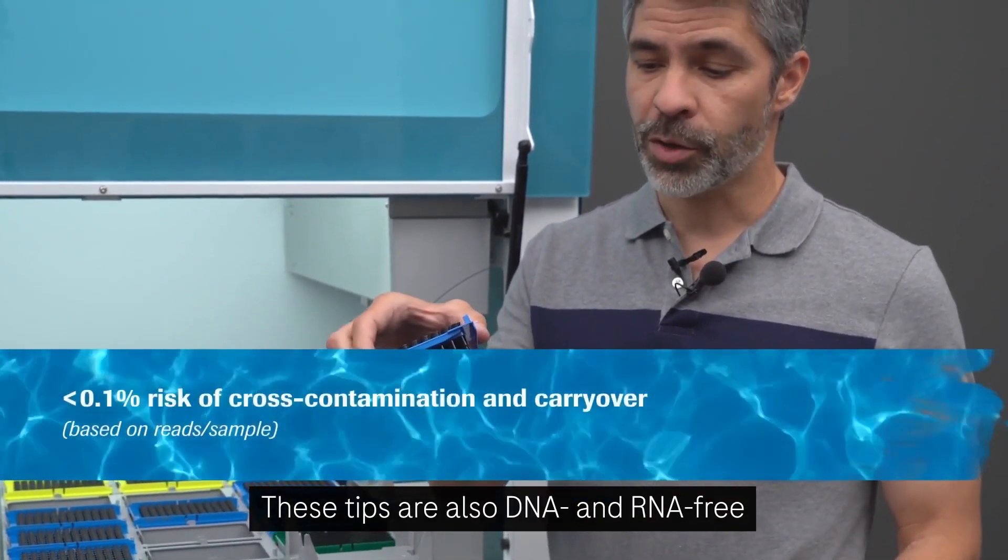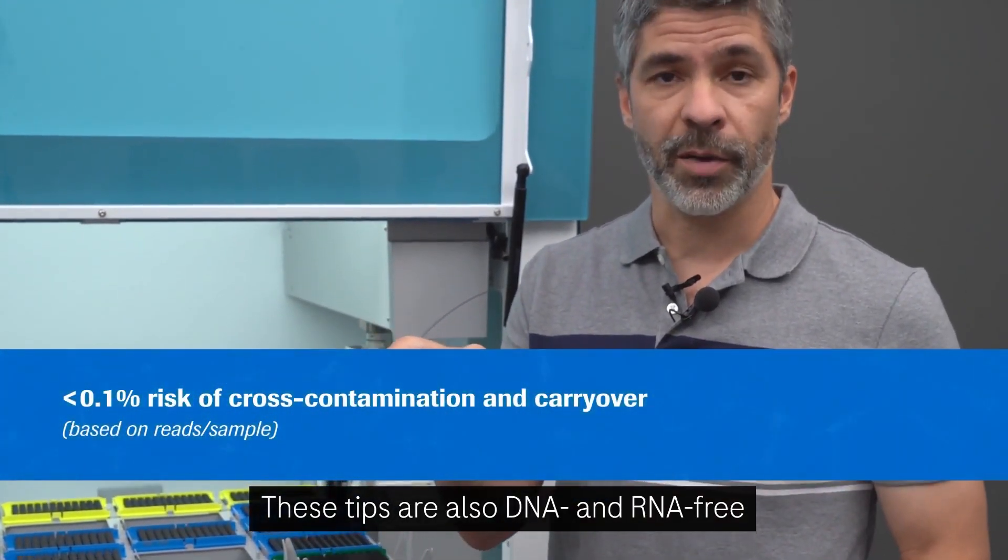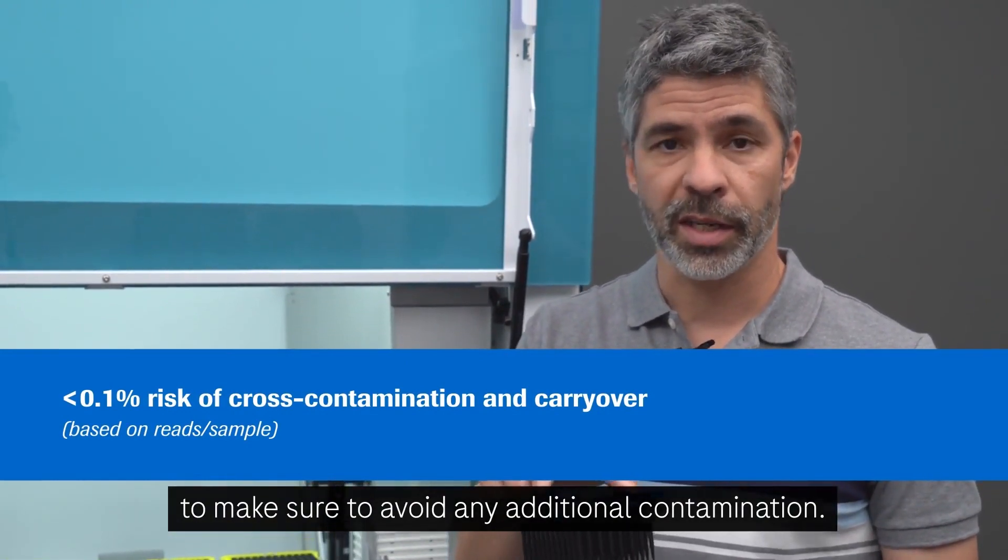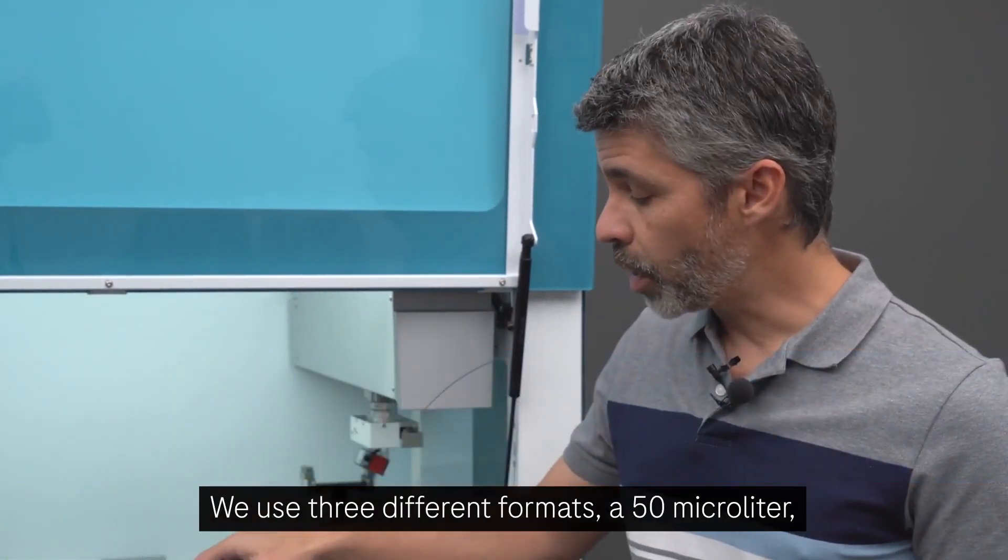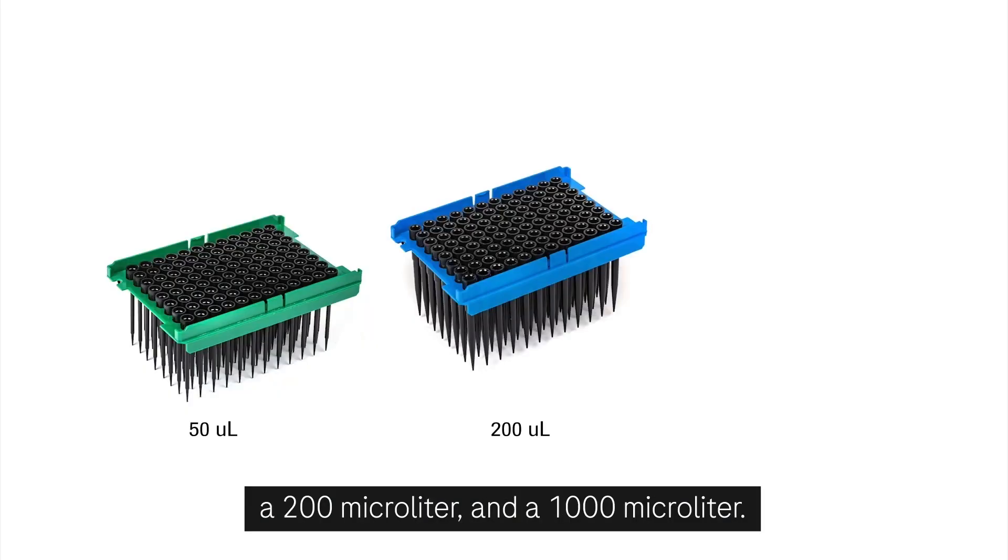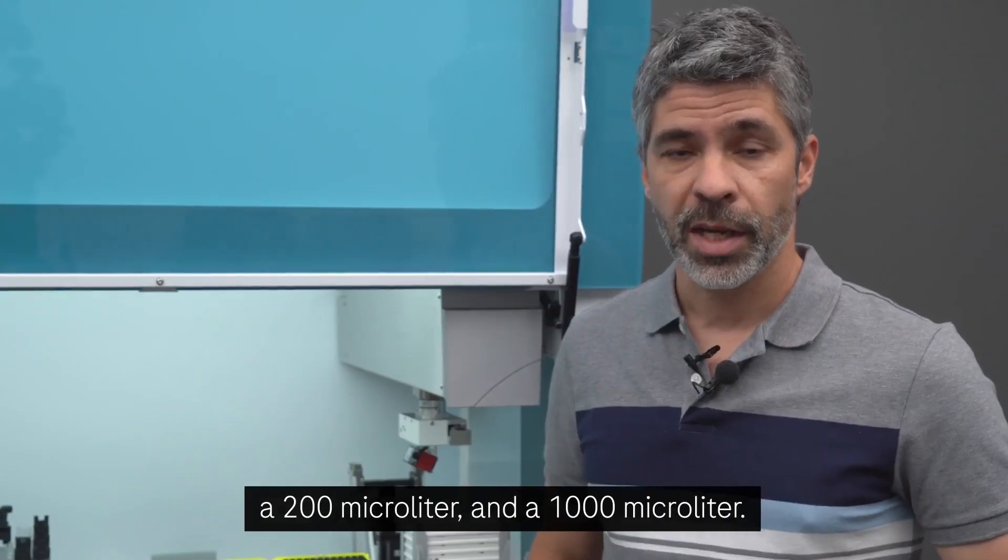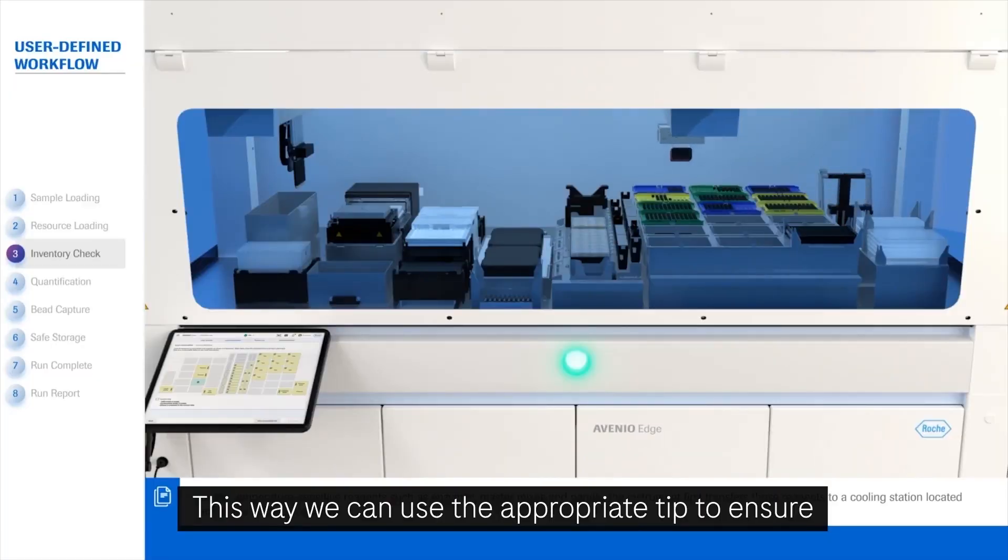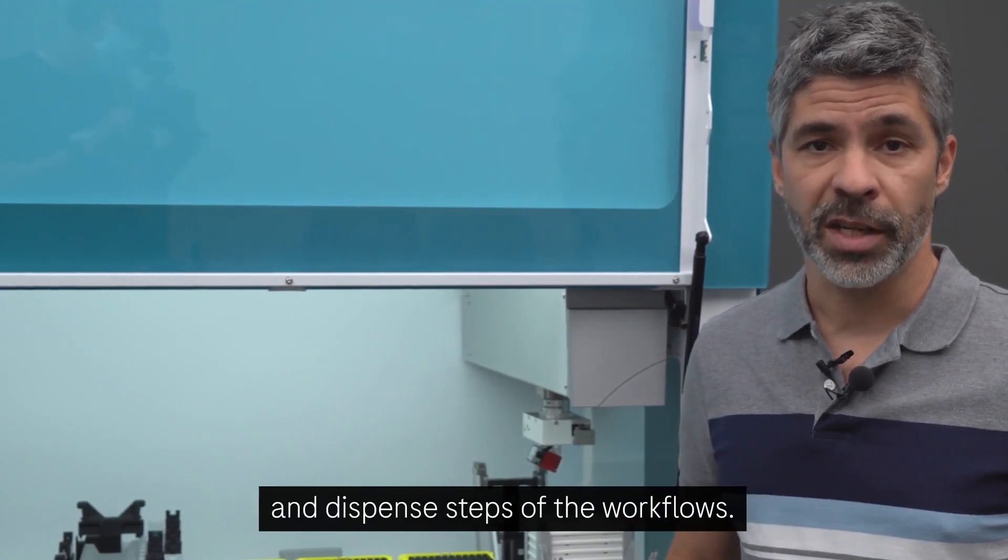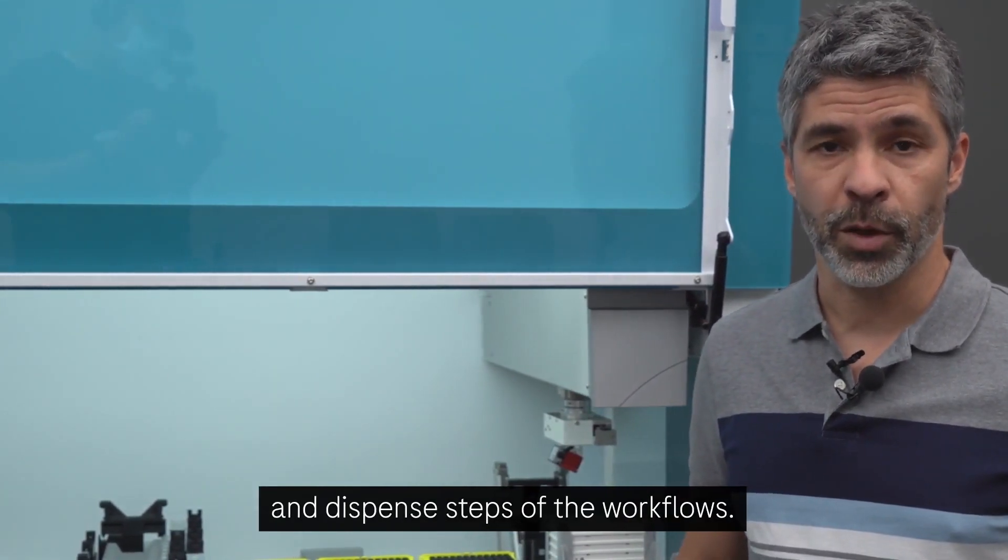These tips are also DNA and RNA free to make sure we avoid any additional contamination. We use three different formats: a 50 µL, a 200 µL and a 1000 µL. This way we can use the appropriate tip to ensure high accuracy of pipetting during the aspiration and dispense steps of the workflows.